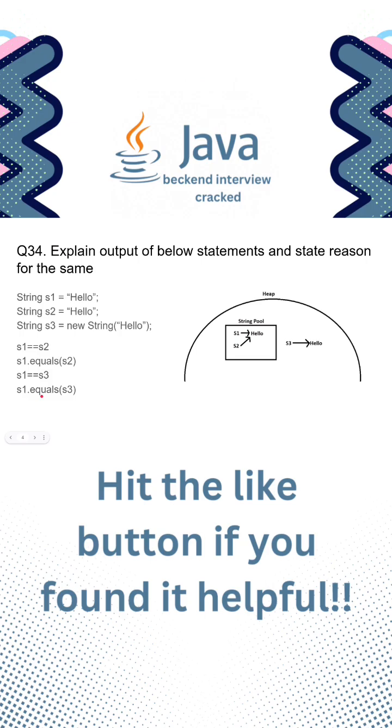Now s1.equals(s3) will be returning true because their content is the same, even if they are present at different memory locations.